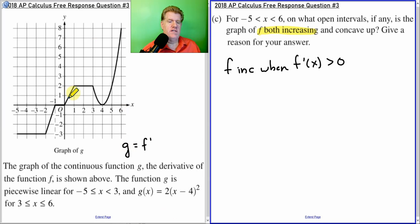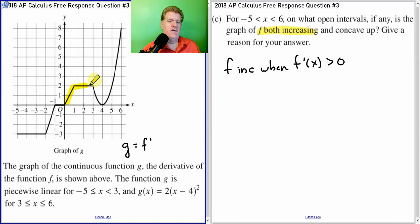Well, G is positive here, here, here, and after 4. It's 0, negative, negative. So, that's out of the question.